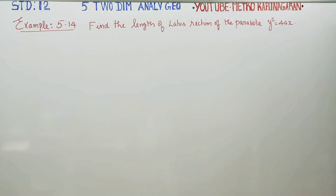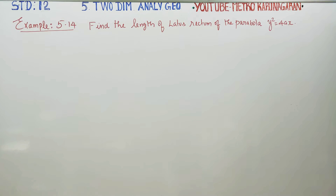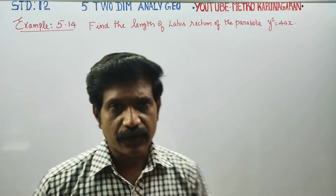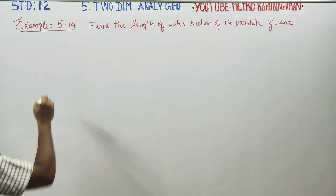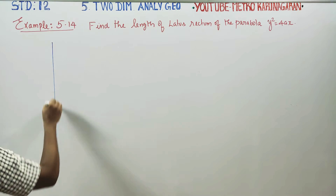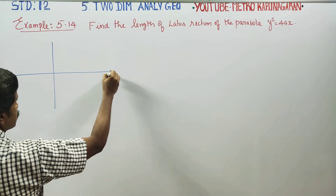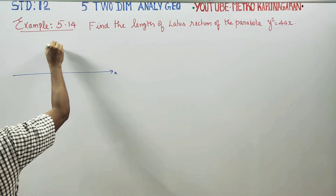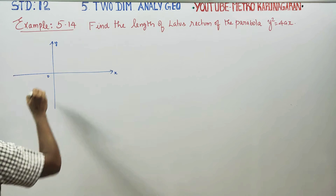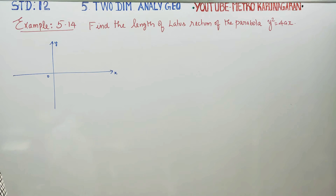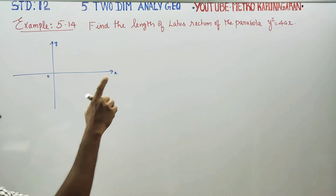Dear students, in two-dimensional analytical geometry, example 5.14: find the length of the latus rectum of the parabola y² = 4ax. Consider this coordinate system with x-axis and y-axis with origin, and the parabola y² = 4ax.